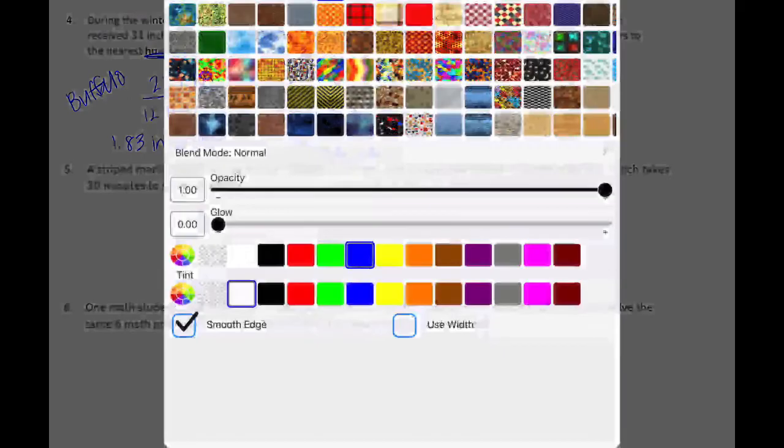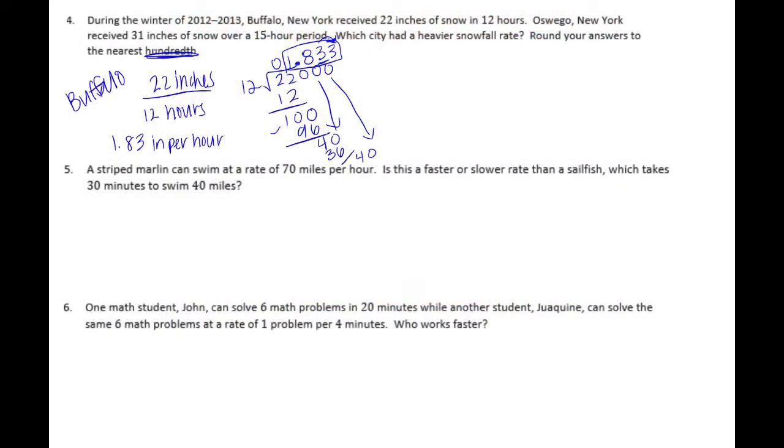For Oswego, they get 31 inches in 15 hours. Let's do 31 divided by 15. Same thing, I'm going to continue by bringing down zero. 15 can't go into 10, so I'll put a zero up there. Bring down another zero. 15 can go into 100, let's try 15 times 7. That's a little too big, so it can only go in 6 times, so that's 90.